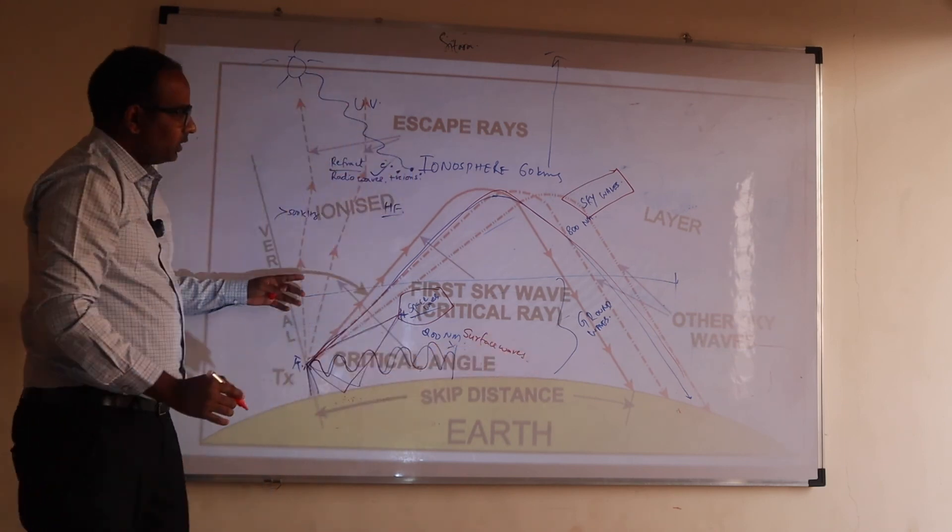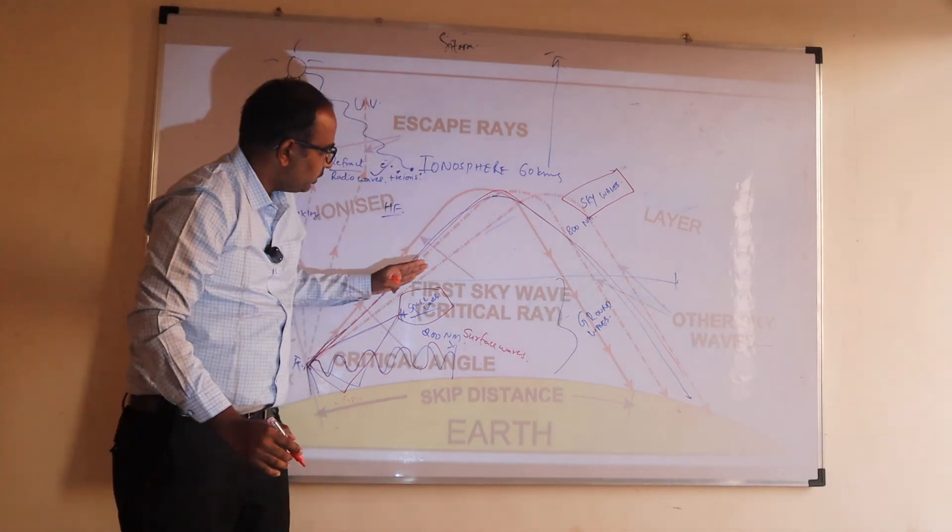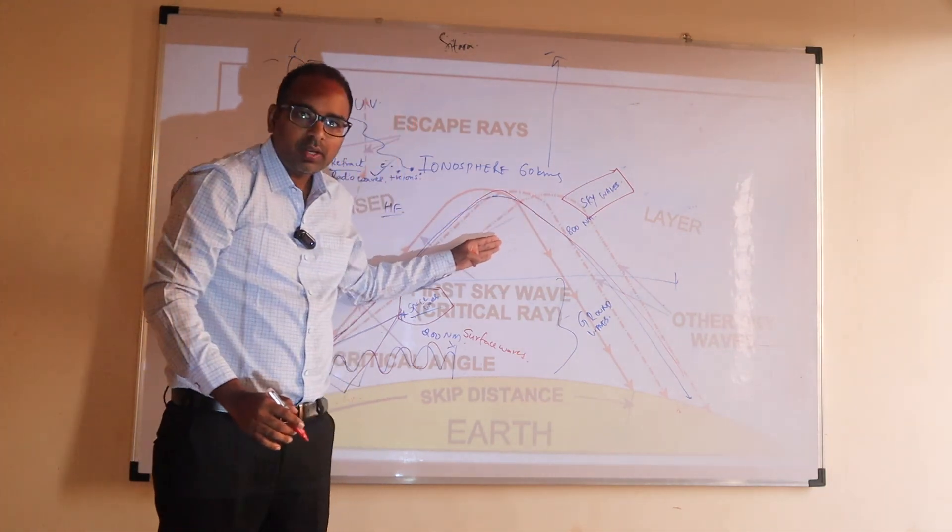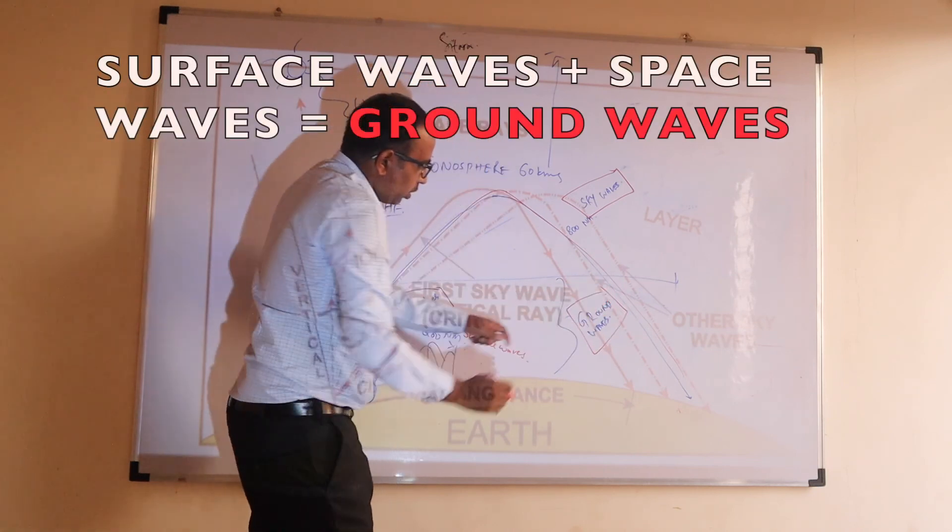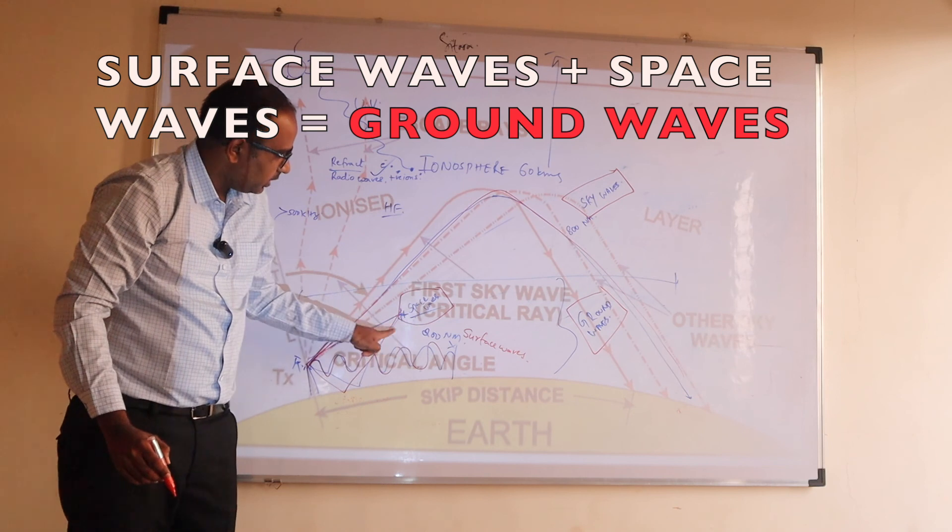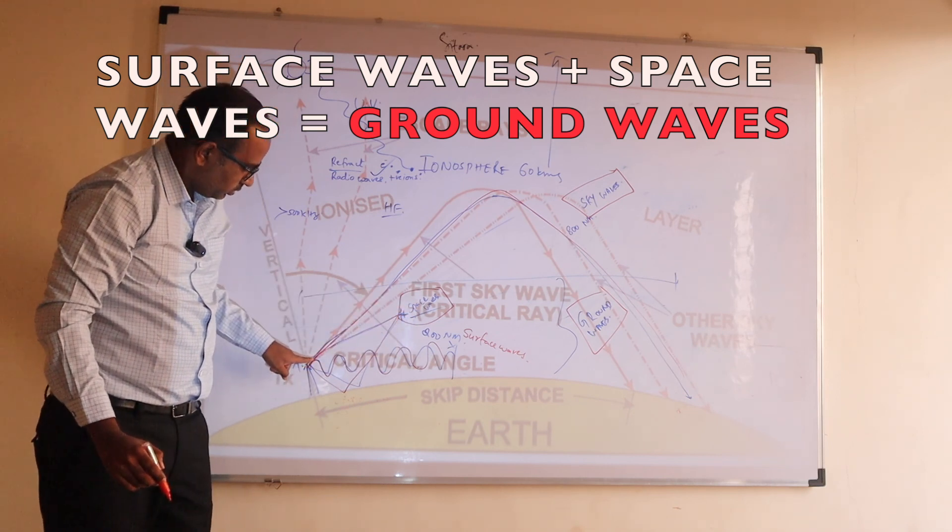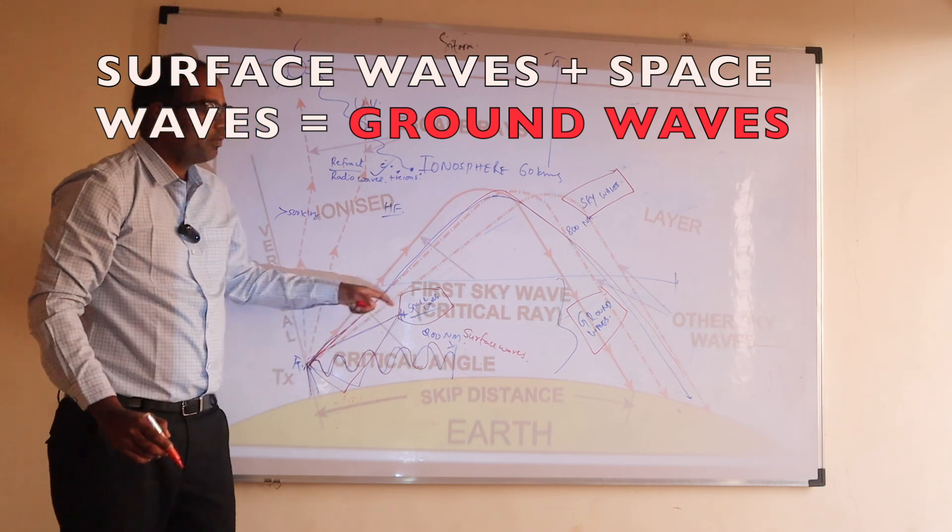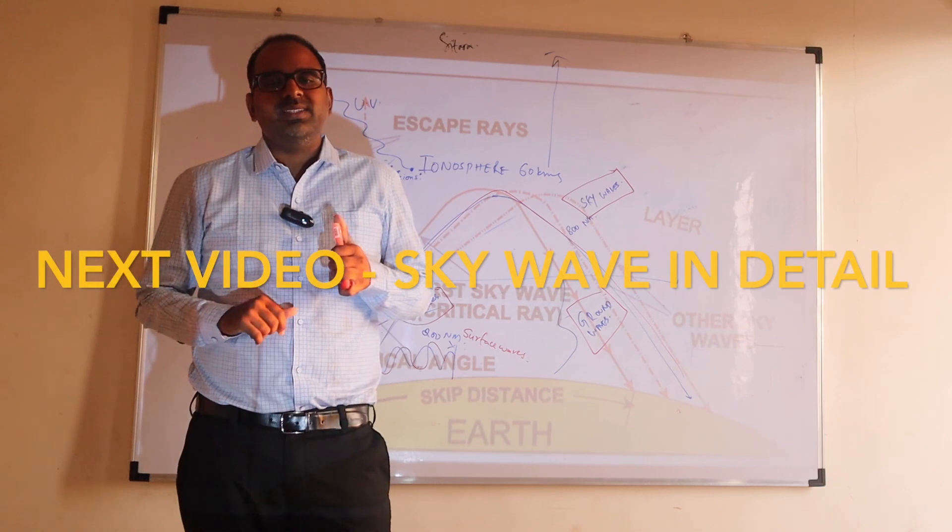Finally, the division is, whichever go to ionosphere are called sky waves. And whichever don't go to ionosphere or non-ionospheric waves are called ground waves. So, ground waves consist of surface waves and space waves. Space waves consist of direct wave, ground reflected wave. Hope this is clear and you score one mark in the exam.